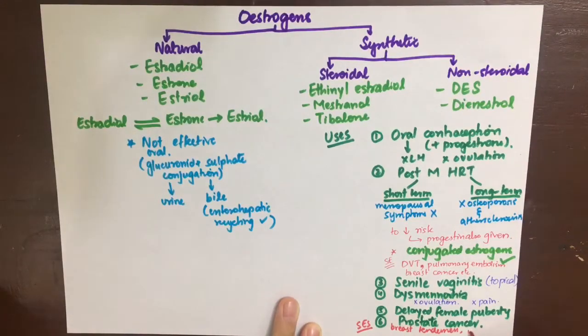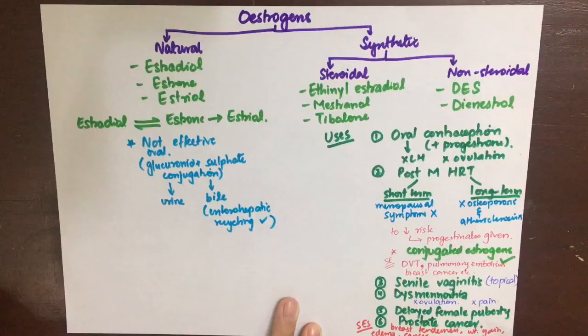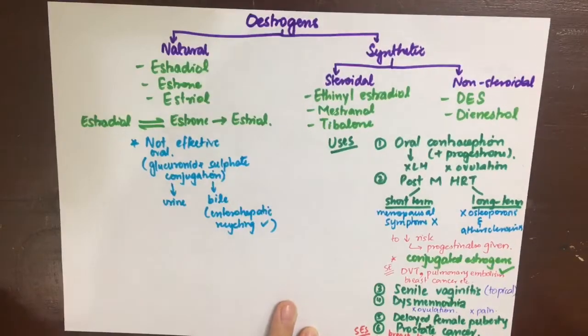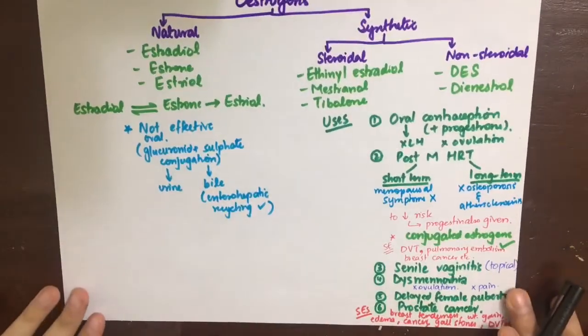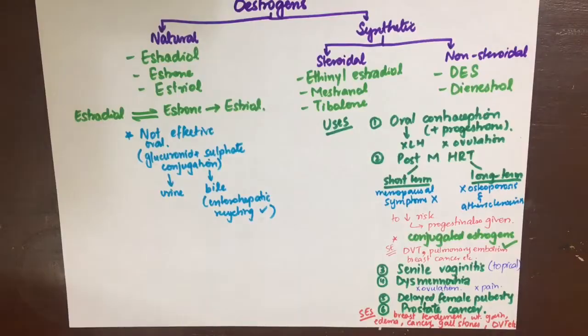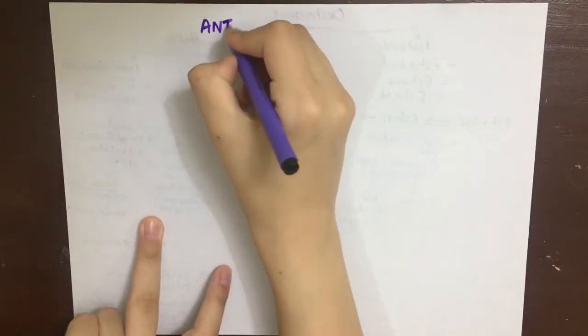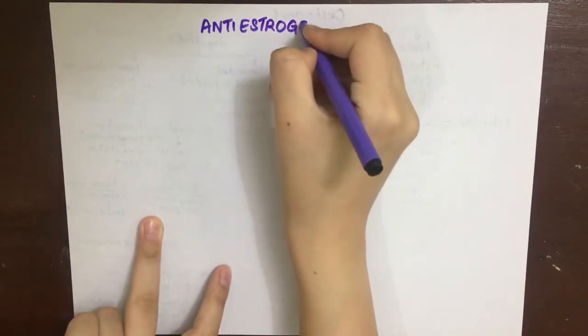Their role in prostate carcinoma is only to improve quality of life; the preferred treatment is GnRH, which will inhibit testosterone. The side effects of estrogen therapy include nausea, vomiting, breast tenderness, edema, and weight gain. Endometrial and breast cancer risk is also present, as are thromboembolic disorders, gallstones, and liver disease. To decrease side effects in hormone replacement therapy, the dose should be decreased.